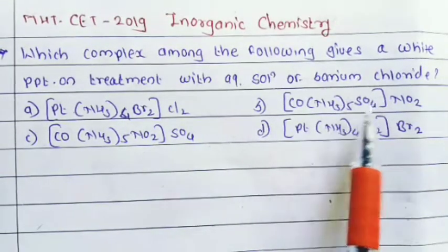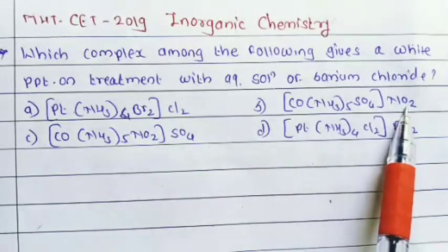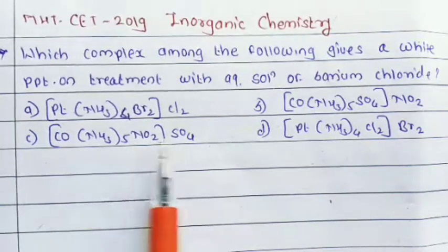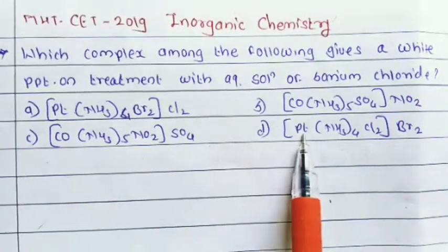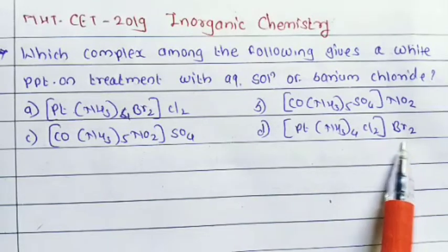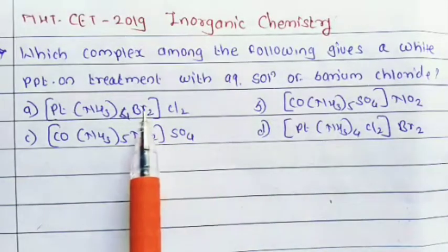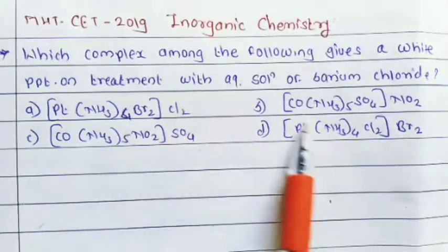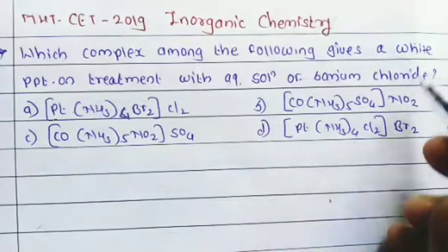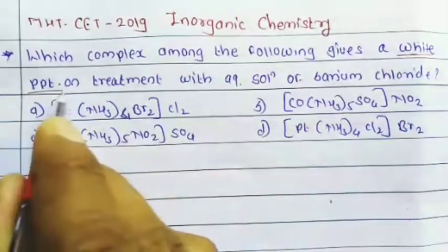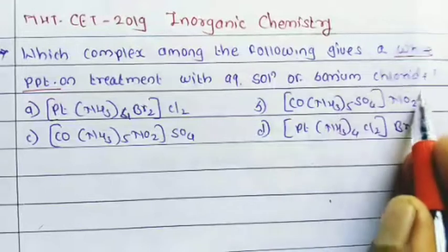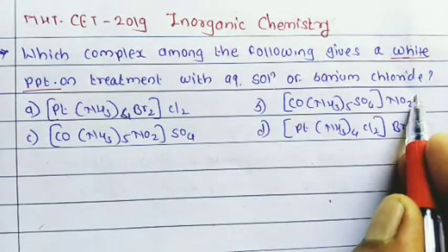Option B: [Co(NH₃)₅SO₄]NO₂, Option C: [Co(NH₃)₅NO₂]SO₄, and Option D: [Pt(NH₃)₄Cl₂]Br₂. Which complex gives a white precipitate on treatment with aqueous solution of barium chloride?